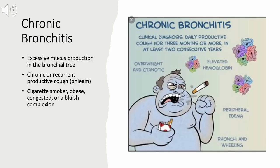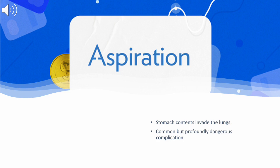Bronchitis is a condition that develops when the bronchial tubes become inflamed. It can be acute or chronic. Common symptoms include low-grade fever, chest congestion, and a cough that may produce yellow or green mucus, along with feeling run down or tired. Repeated bouts of bronchitis may indicate chronic obstructive pulmonary disease. Aspiration is when food, liquid, or other material accidentally enters the airway or lungs, which can cause serious health problems such as pneumonia.